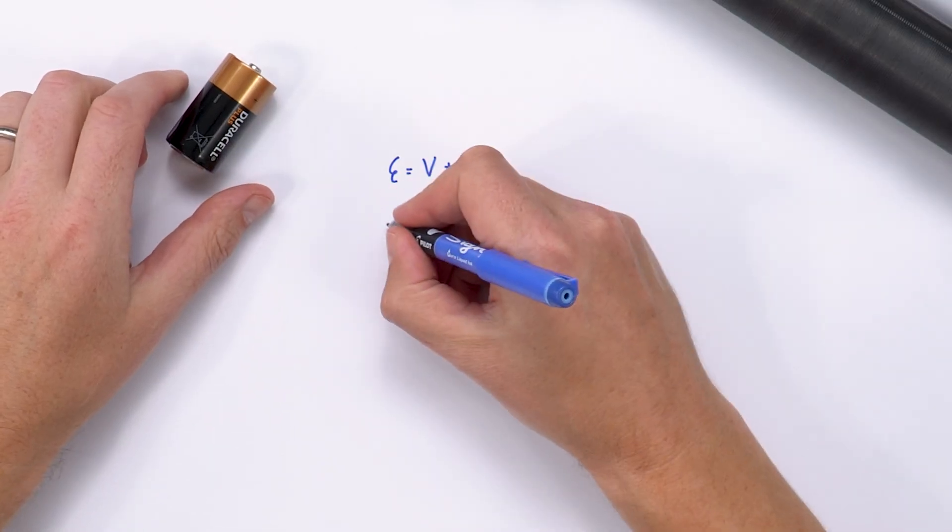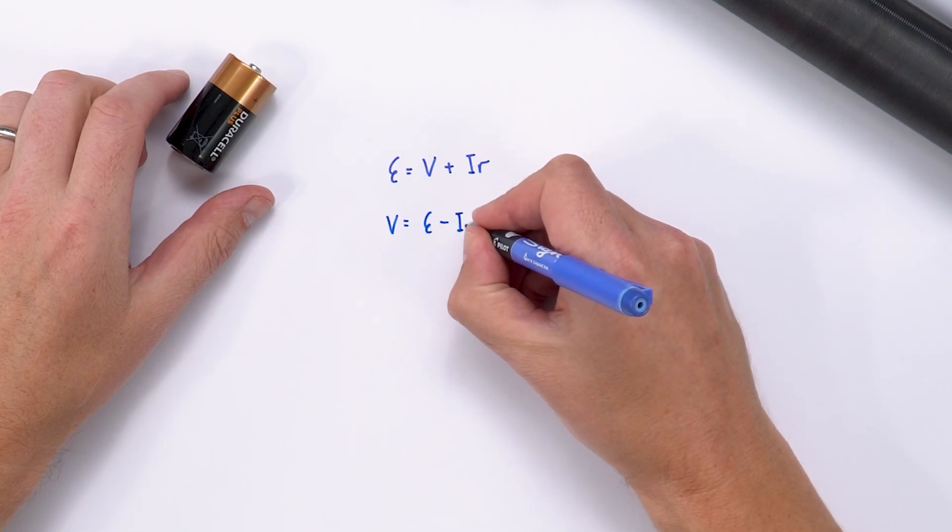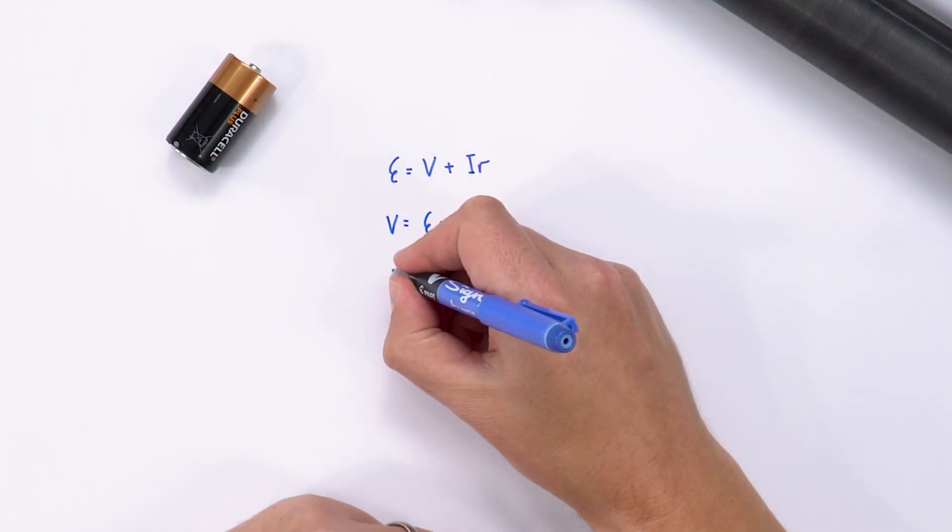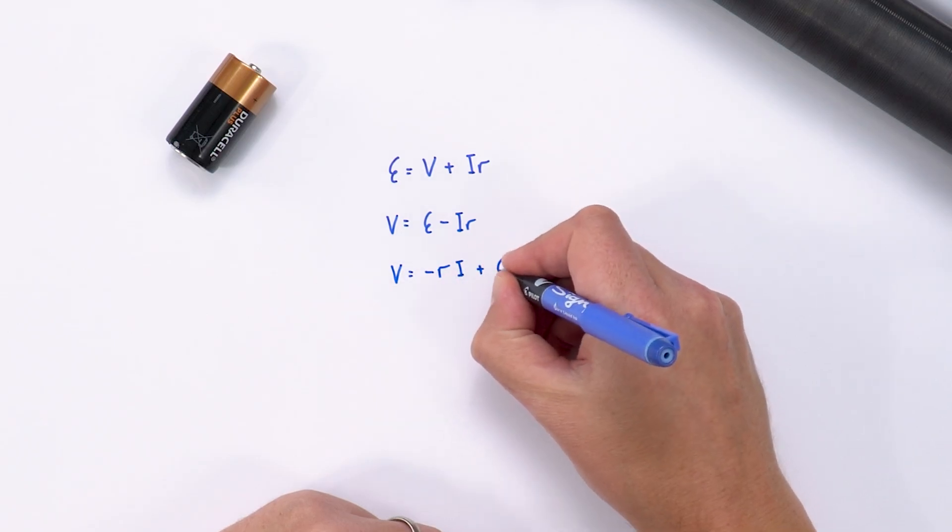Now we could rearrange this and say that V is equal to E minus IR, and we could also rewrite that as V is equal to minus RI plus E.